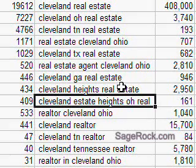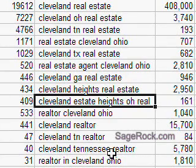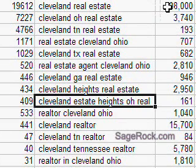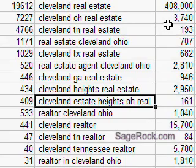There are other tools that are much more exact, but for free you can't really beat it. Our list here is organized from the most searched to the least searched. Cleveland Real Estate had 19,612 people search on it with 408,000 competitors — it's the most competitive phrase on this list. If you're a large realtor you might want to compete for that, but if you're a small realtor and brand new to optimization, I'd recommend starting with a less competitive phrase so you see results.